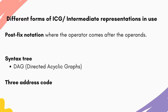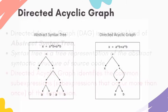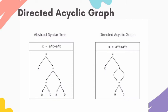The second form of representation is the syntax tree. In this syntax tree, we use a variant called directed acyclic graphs (DAG). A DAG is a special kind of abstract syntax tree. For the expression h equals a times b plus a times b, we can represent it using both an abstract syntax tree and a DAG.